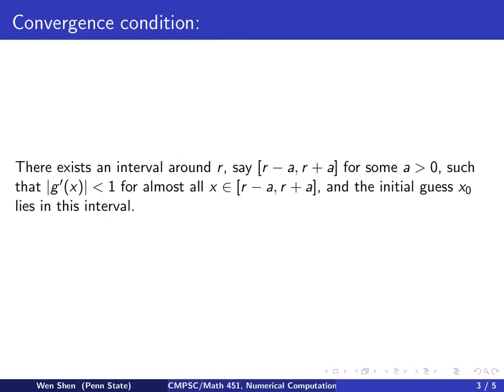Such that the derivative |g'(x)| is strictly less than 1 for almost all x on the interval from r - a to r + a. And also at the same time.